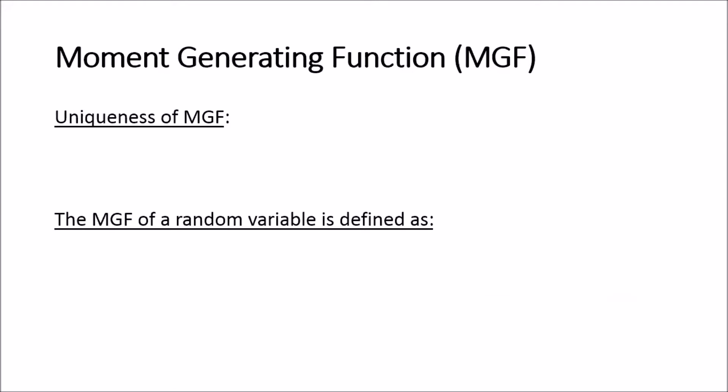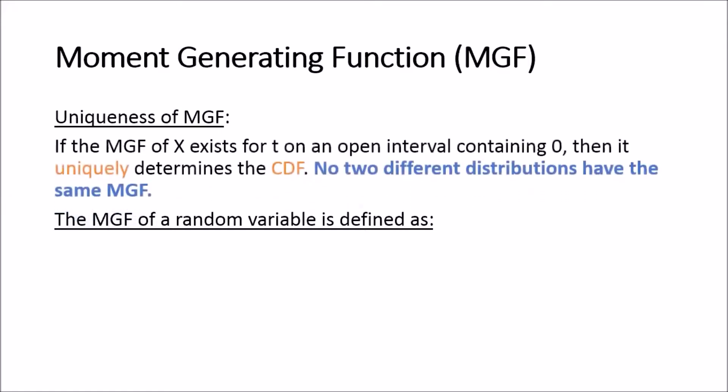Let's look at the actual characteristics and definitions of a moment generating function. Firstly, the uniqueness: if the moment generating function of a random variable X exists for T on an open interval containing zero, then it uniquely determines the cumulative distribution function. No two different distributions have the same moment generating function. If you find the moment generating function of your distribution and it matches a known distribution's MGF, then you know your random variable must follow that distribution.